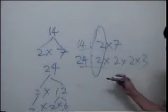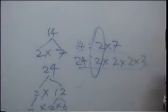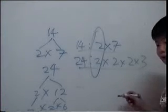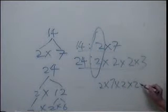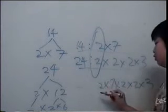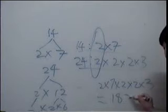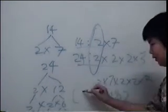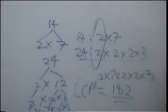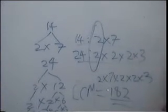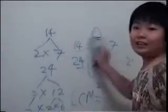Then we're going to multiply these numbers. Before the circle, we're just going to multiply them one time. So the least common multiple of 14 and 24 equals 168.